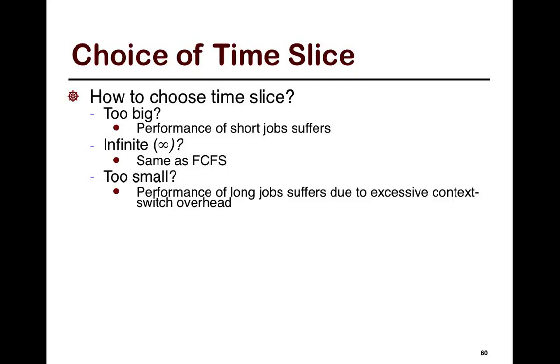then it's not really going to get swapped in until all the long jobs finish, right? And when you have the time slice tending to infinity, then it just boils down to FCFS because within the time quantum, every job is going to finish. And if you have long jobs, then it's just going to monopolize the system. If the time slice is too small, then performance of the long job suffers due to excessive context switch overhead.